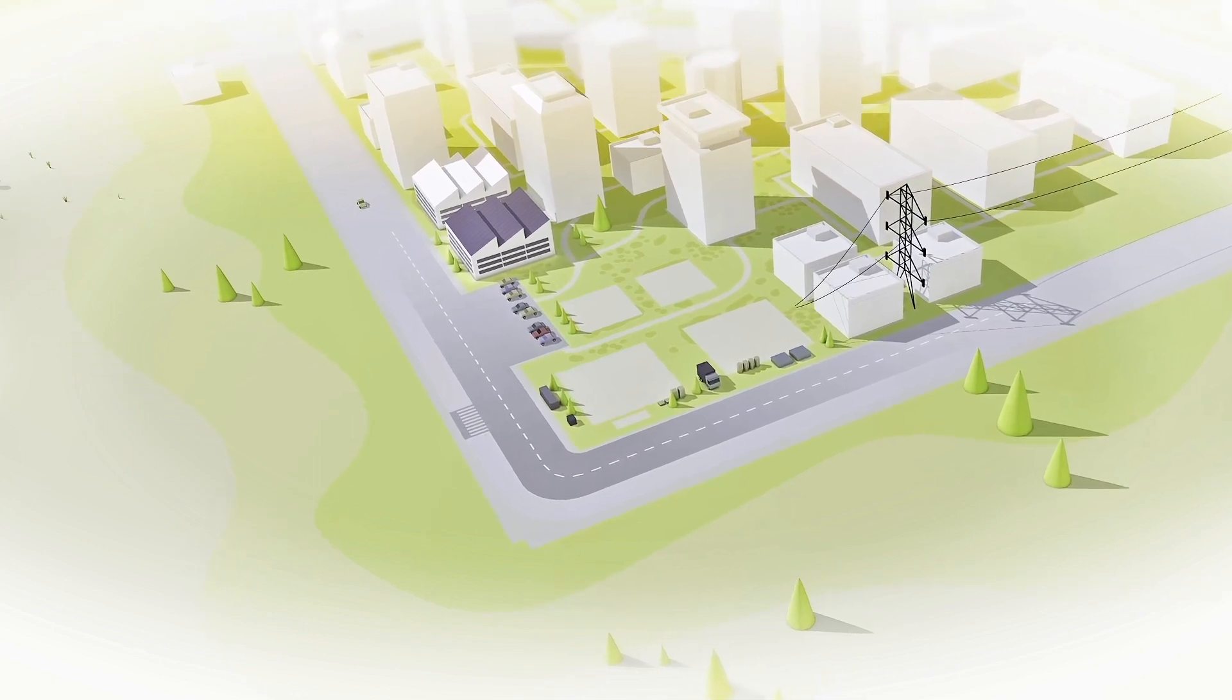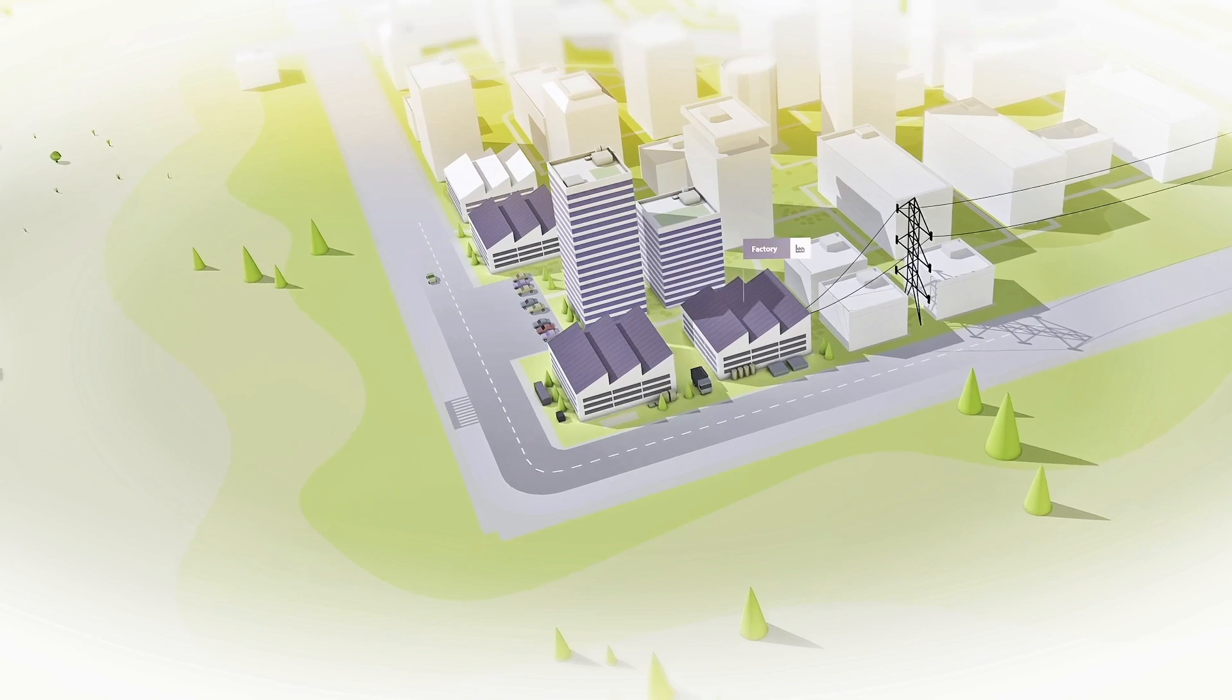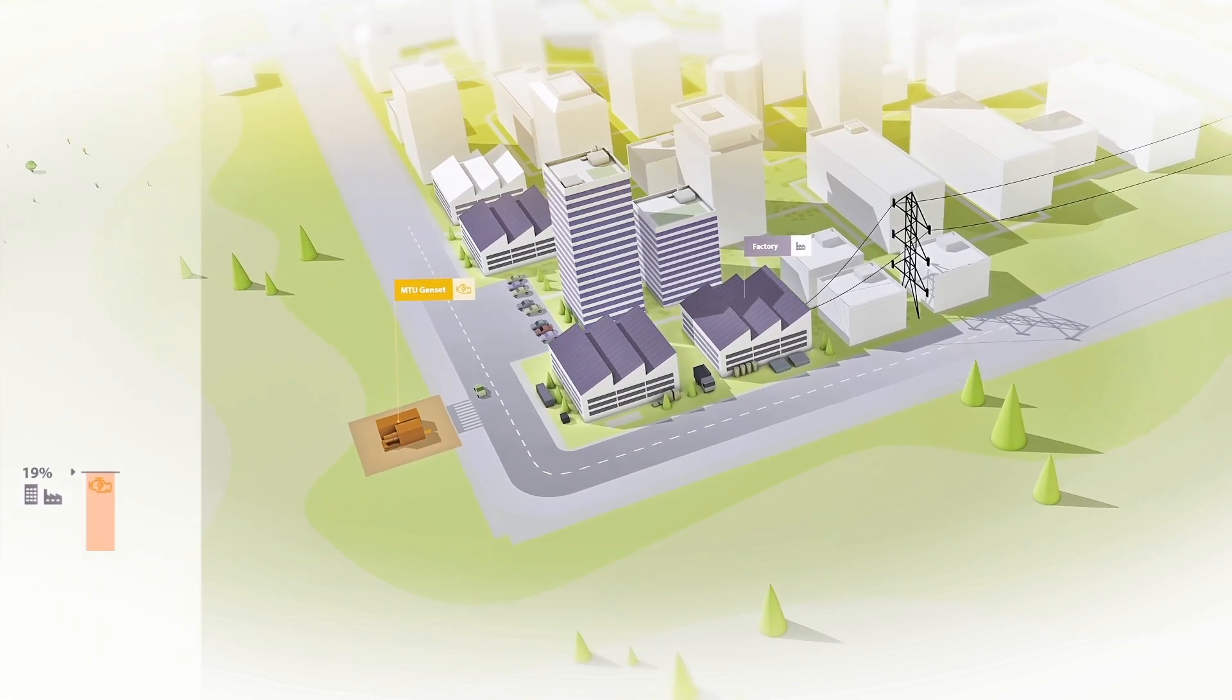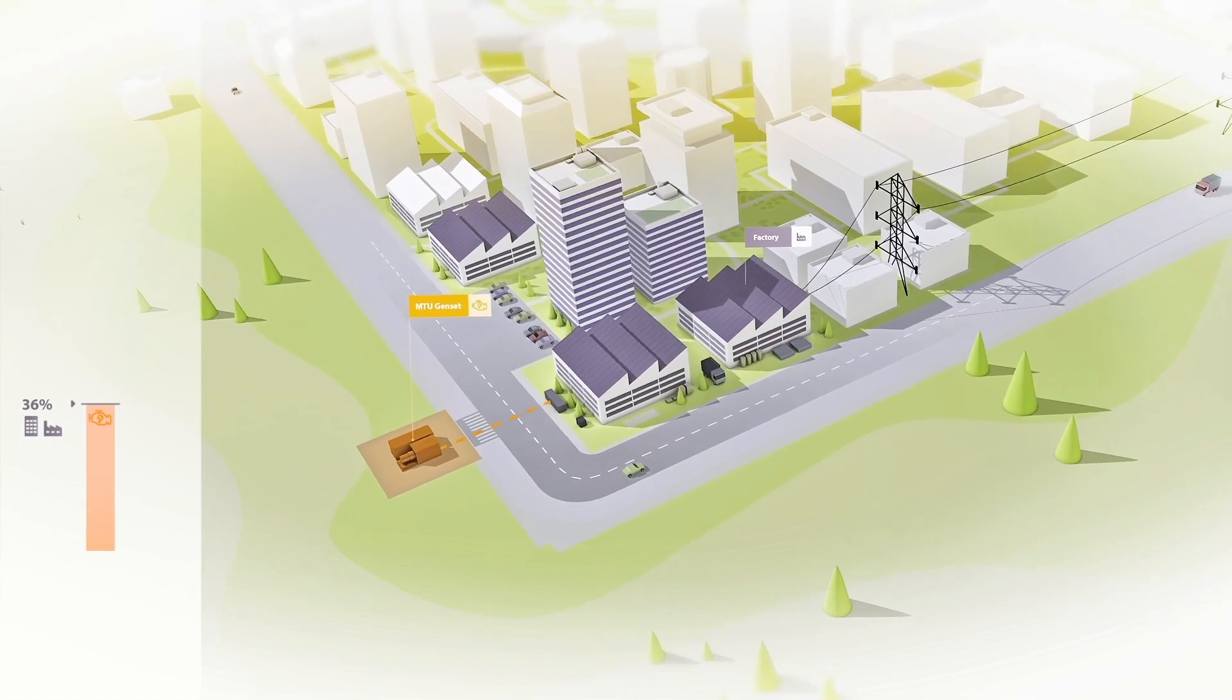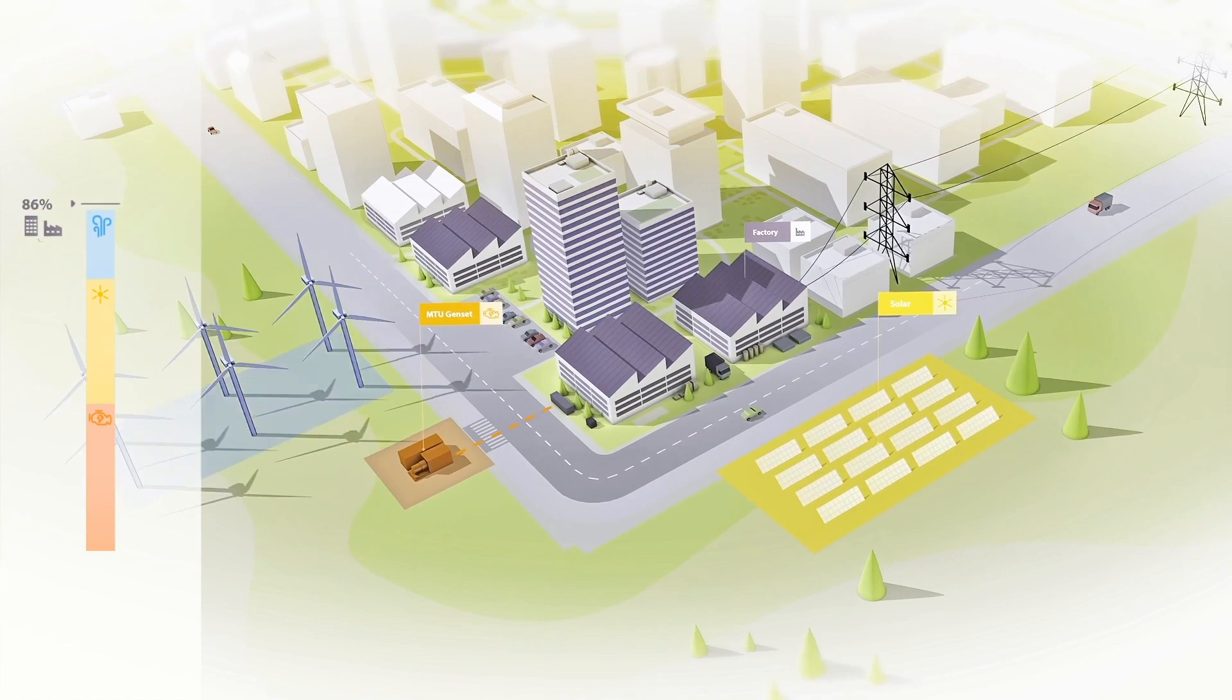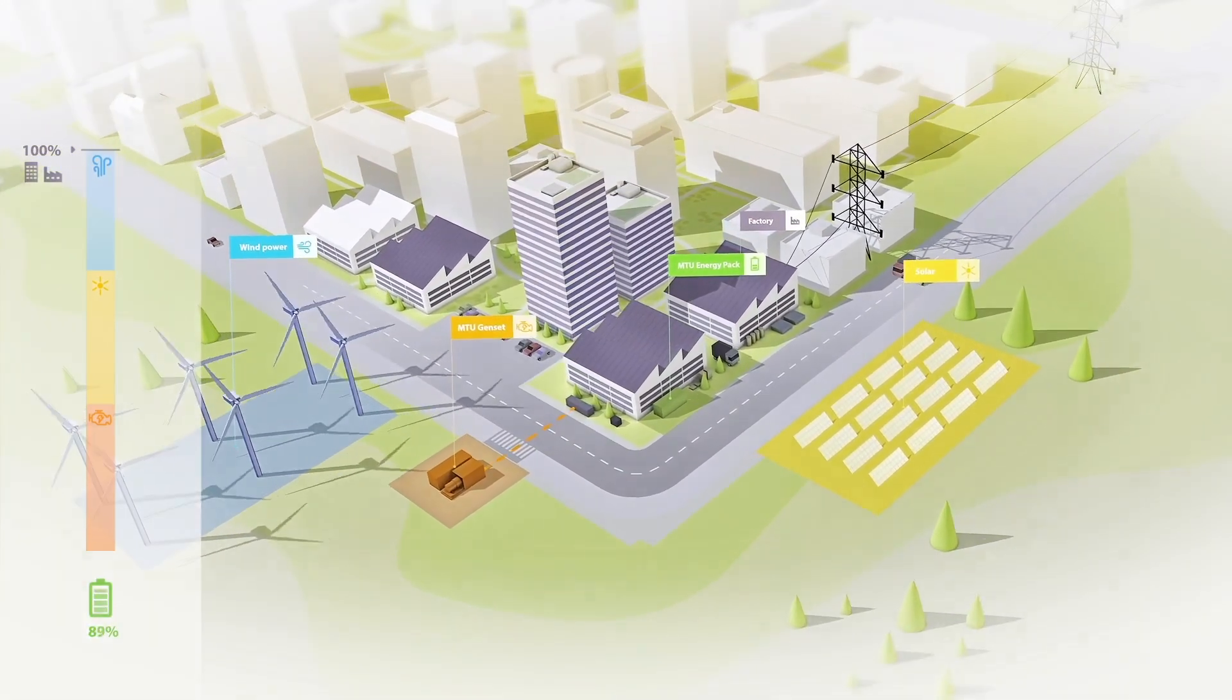Our example shows a company that operates an office building and a factory. It is already equipped with an MTU generator set that generates electricity from diesel fuel or gas. For the microgrid, a solar panel array, a wind power unit, and an MTU energy pack for storing excess electricity are installed as well.